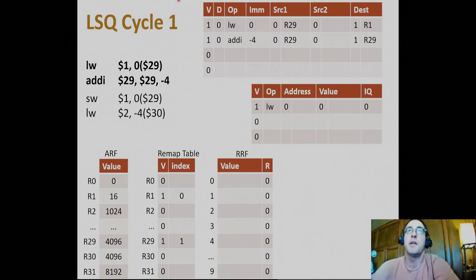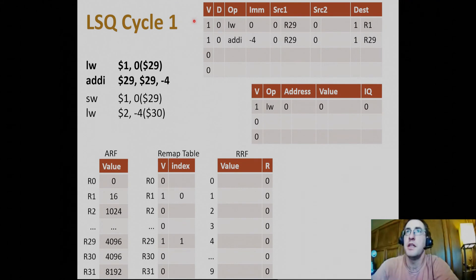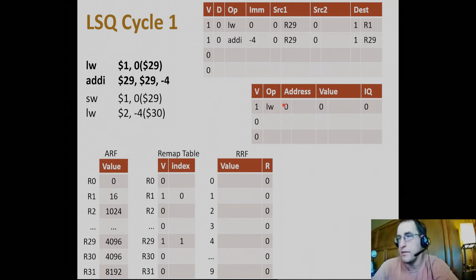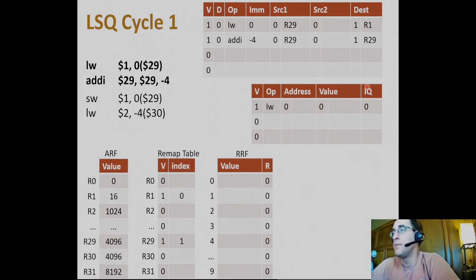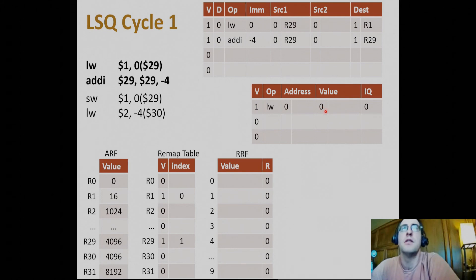This allows address generation out of order while doing data memory accesses in order when addresses are dependent. When earlier effective addresses are known and don't match, we can dispatch from the load-store queue out of order even if data isn't ready yet. Here's our same example — above is the issue queue, below is the load-store queue. When we populate an issue slot with a memory operation, we also allocate a slot in the load-store queue — at the end of decode. The load-store queue stores the address, the value for store instructions, and the issue queue slot number as a tag or index.